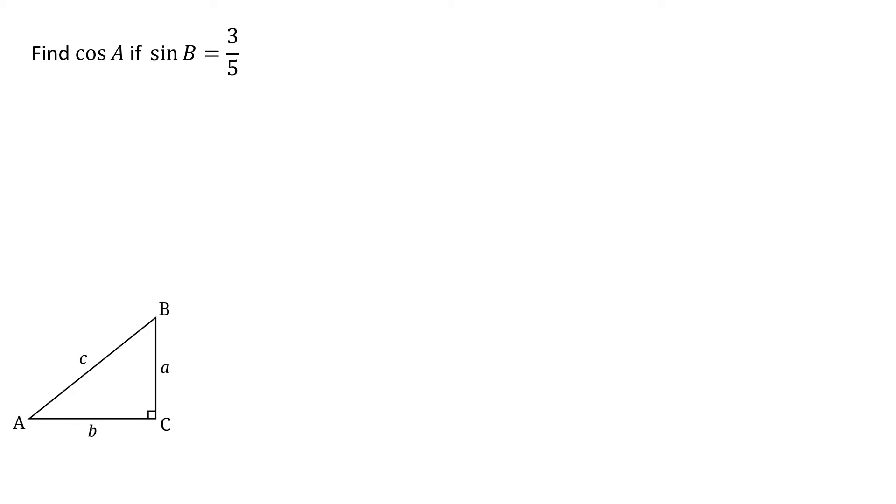Okay, hmm, I don't know what this has to do with what we're just doing, but let's have some fun with it. Cosine of A, find cosine of A if sine of B is 3 over 5. Well, I know sine is opposite over hypotenuse. So opposite side B has to be the 3. Hypotenuse is 5. Well, I know cosine is adjacent over hypotenuse. So from angle A, the adjacent side is 3 and hypotenuse is 5. So cosine of angle A would be 3 fifths. Hmm, that's the same as the sine of B. Interesting.